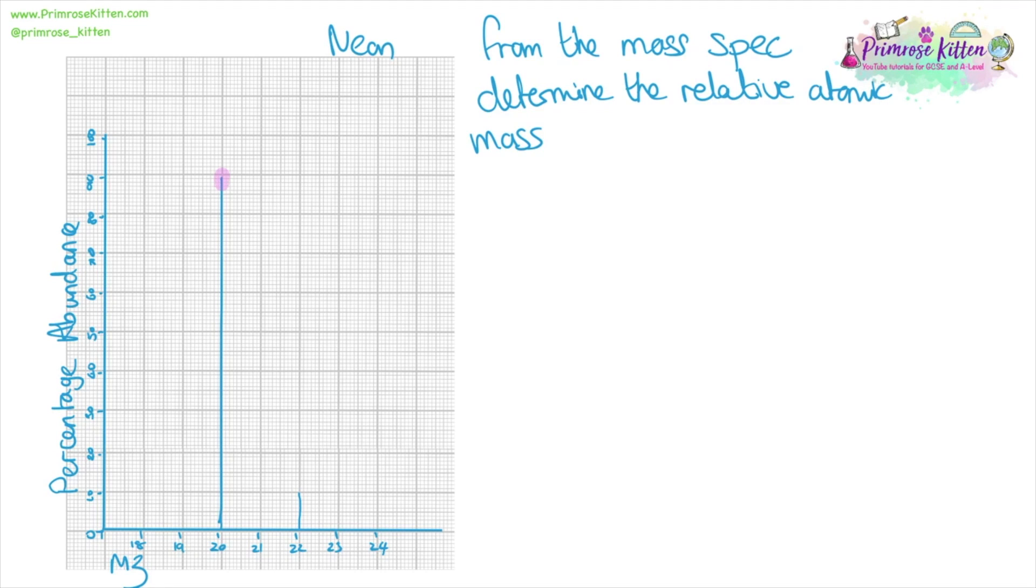Often you'll be given mass spec data and asked to determine the relative atomic mass. This is for neon and you can see that the M/z of 20 we have 90% and the M/z of 22 we have relative amounts of 10%.